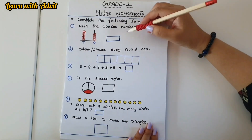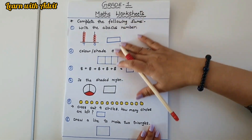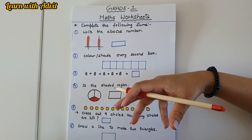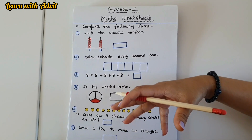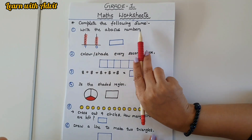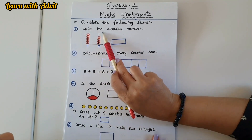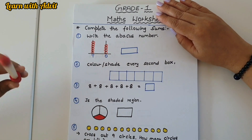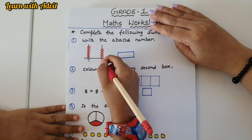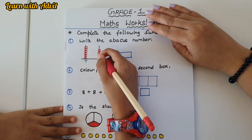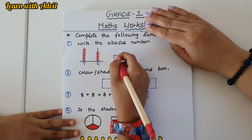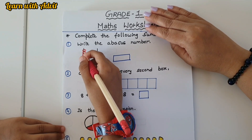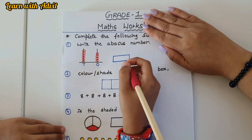Here is the first worksheet. There are some random questions about mental maths — quick math. You have to answer in a quick manner. Write the abacus number: there are some numbers and beads, so you have to count the beads and write the number. In the ones place there are 1, 2, 3, 4 beads, and in the tens place there are 1, 2, 3, 4, 5, 6 beads.